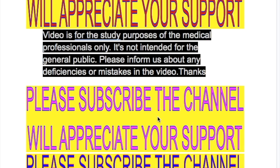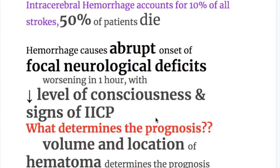In this video, we will discuss the most common sites of hemorrhage in the brain — hemorrhagic stroke. Hemorrhage causes abrupt onset of focal neurological deficits, worsening in about one hour, with decreased level of consciousness and signs of increased intracranial pressure.